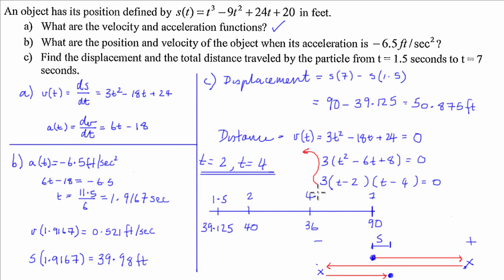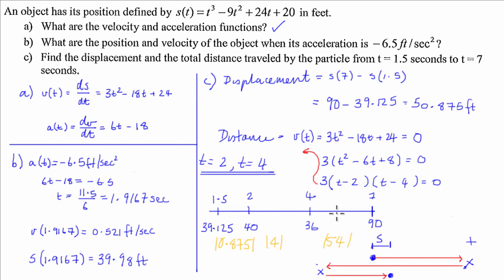We then use those numbers to work out the difference between each consecutive pair. The difference between 39.125 and 40 is 0.875. The difference between 40 and 36 is 4, taking the absolute value. The difference between 36 and 90 is 54. So the total distance travelled equals 0.875 plus 4 plus 54, which is 58.875 feet.